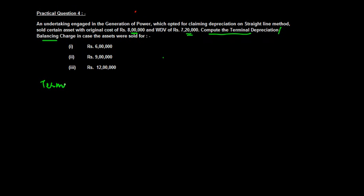First, let me explain what you mean by terminal depreciation. There are normally three things which are involved in any asset: one is the actual cost, second is the written down value, and the third is the sale value.